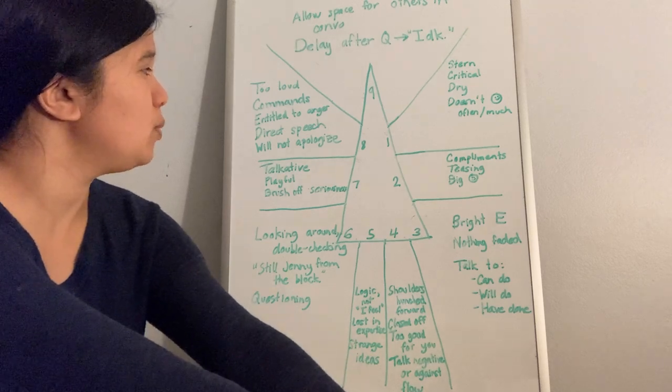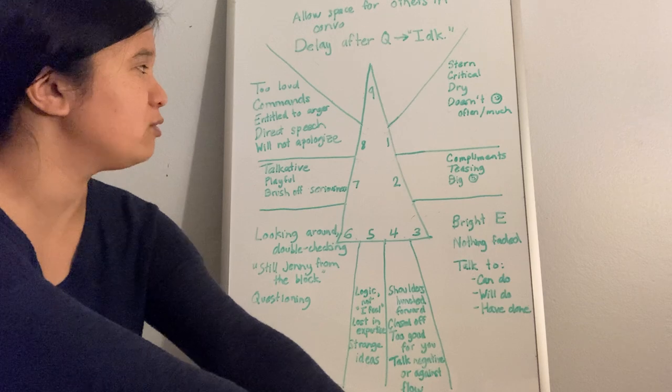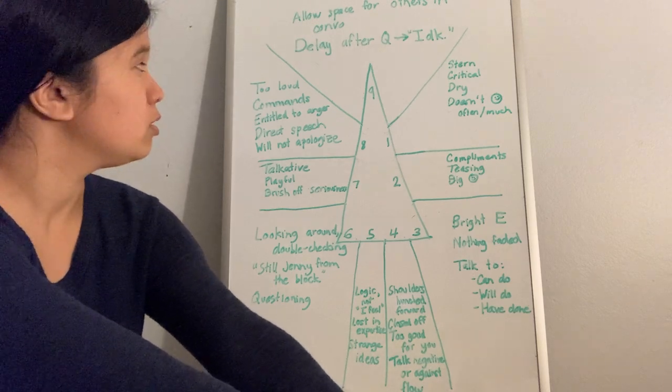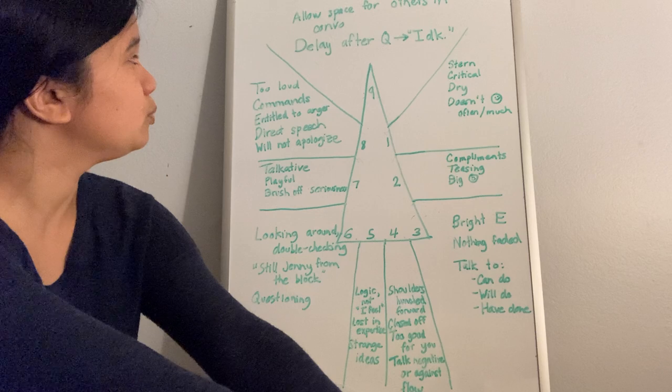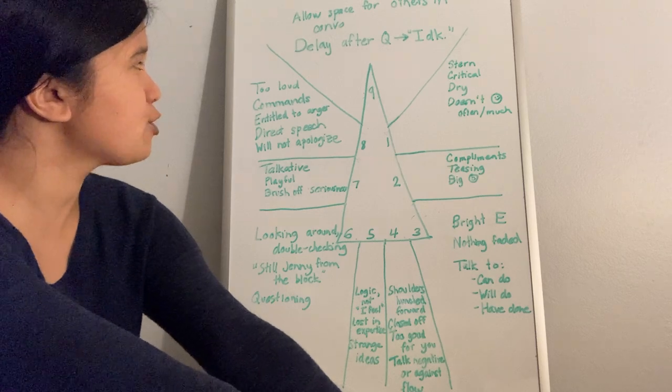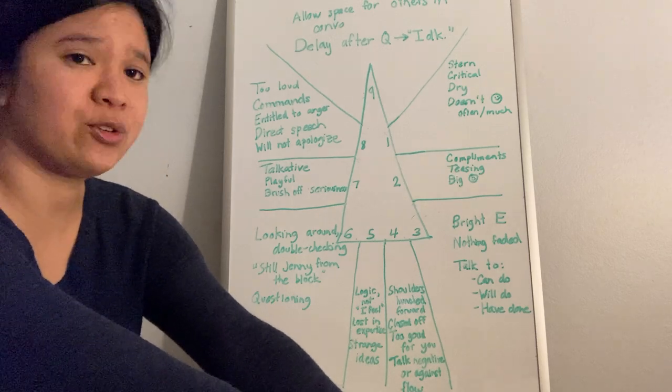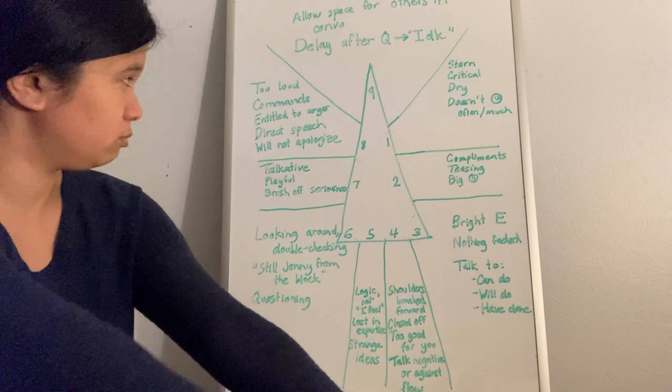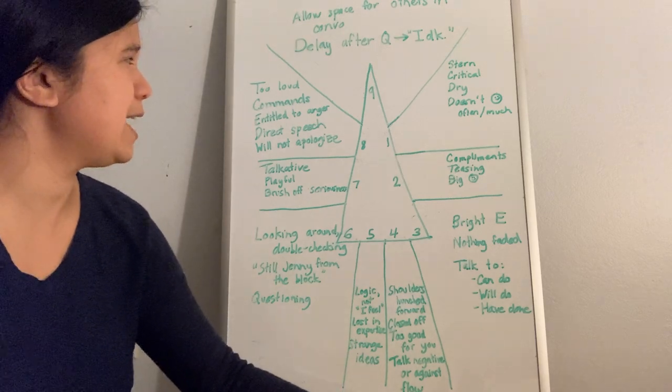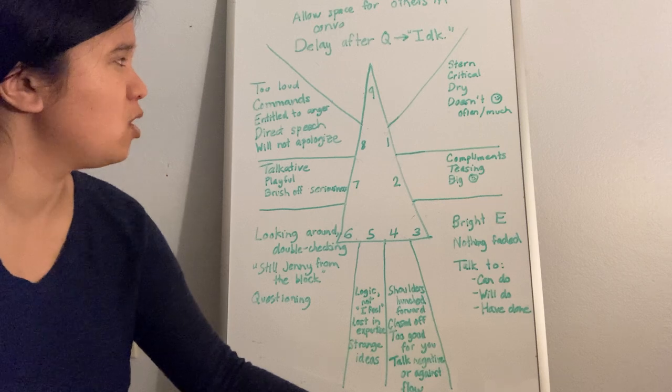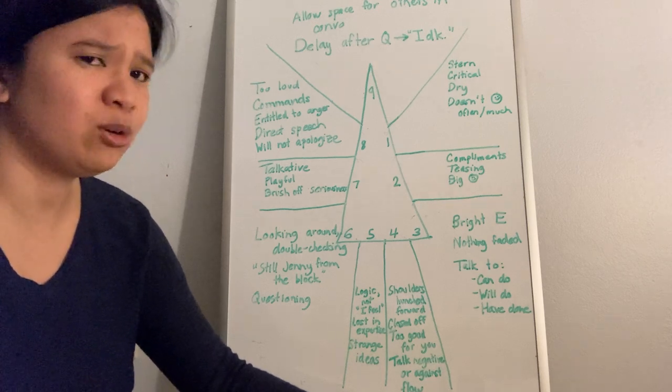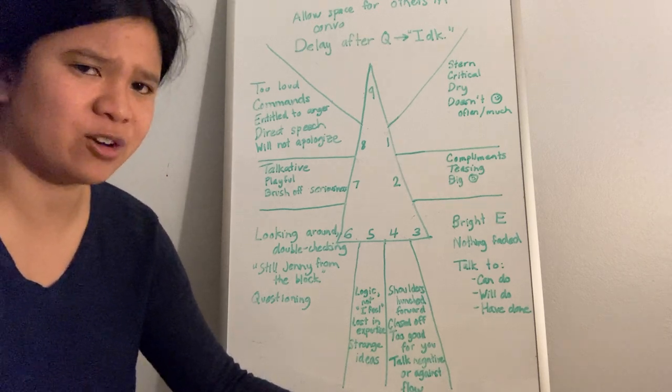Finally, nope, not finally. Next, we have type 9 in the gut triad. 9s will allow space for others in conversation and they will delay after being posed questions with I don't know or I haven't considered that.